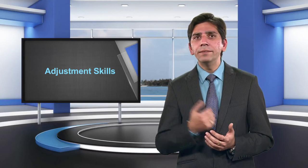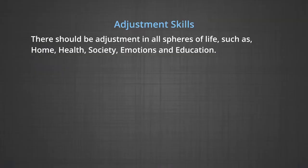When we talk about adjustment skills, we know that life is adjustment. There should be adjustment in all spheres of life such as home, health, society, emotions and education. All of us need to learn to live together. Adjustment simultaneously in all areas is rarely found these days. There is a need to realize comprehensive adjustment and a dire need to realize symbiosis.